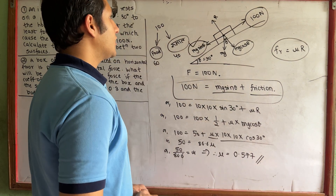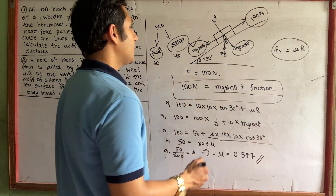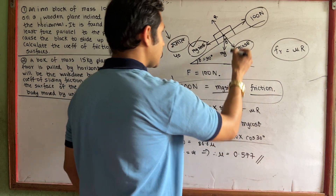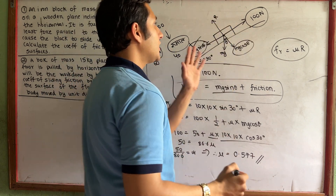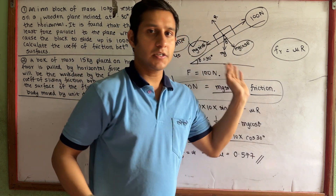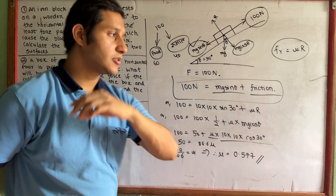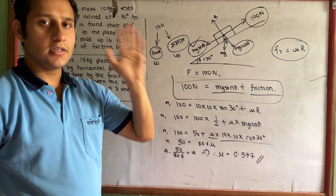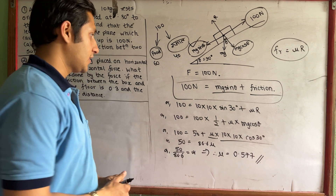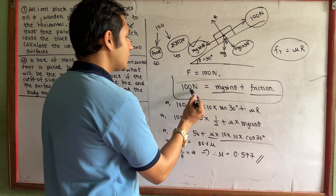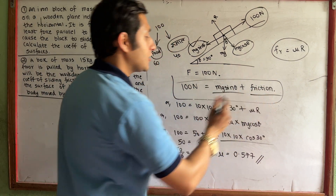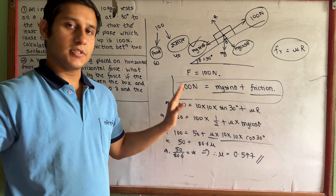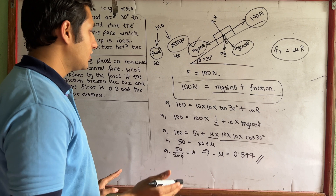This question is very simple. Do you understand this question? What happens in this question — the 100 N condition is applied, and this balance is maintained. It's clear.